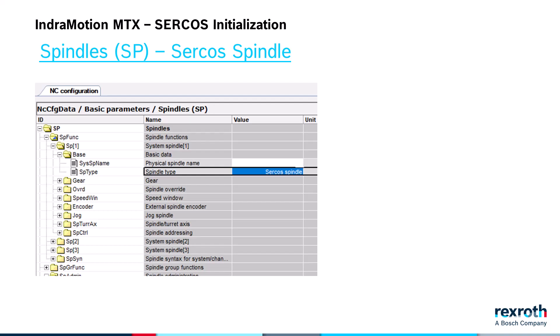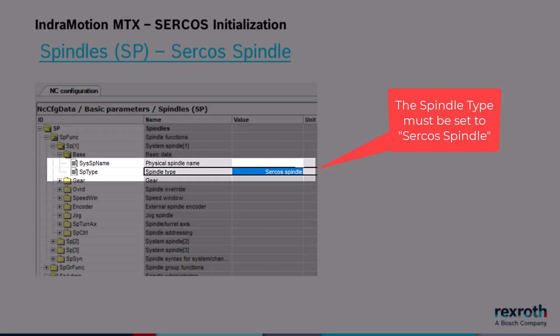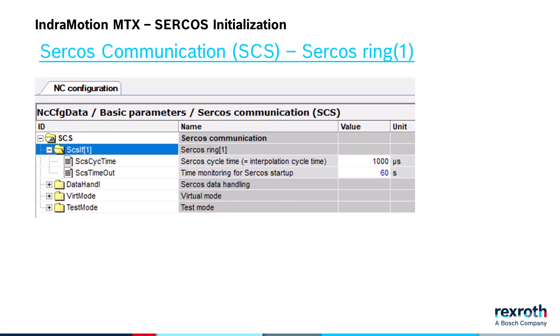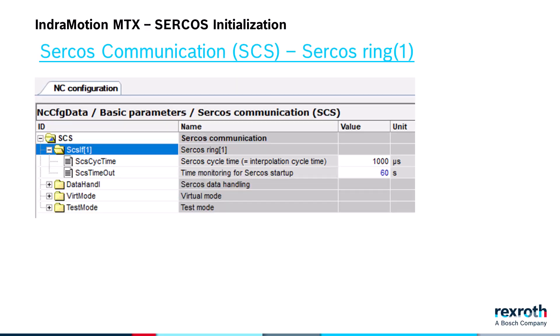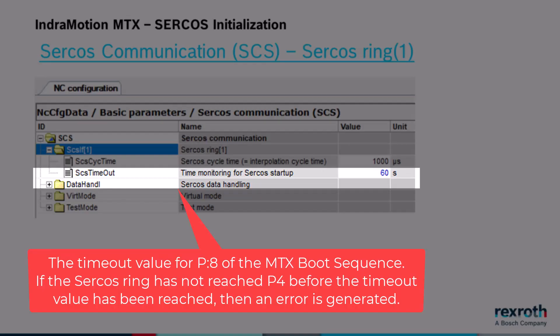In the parameters for spindles, the spindle type must be set to CIRCOS spindle. In the parameters for CIRCOS communication, you set the cycle time for CIRCOS, which is also the cycle time for the interpolator. The cycle time gets written to drive parameters S1 and S2. The remaining timing parameters S3 to S9 are automatically calculated by the control. The timeout value for CIRCOS startup determines how long the control remains in phase 8 during the boot-up sequence.